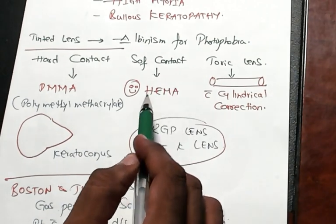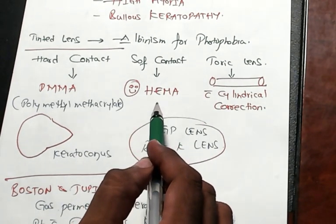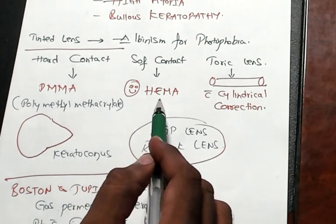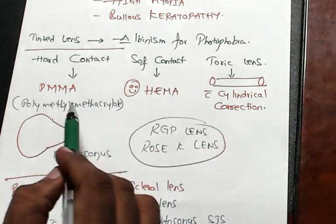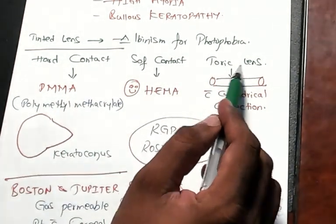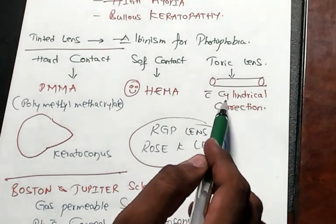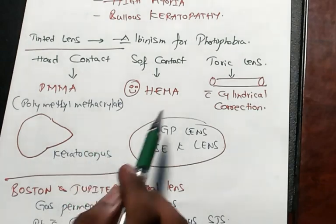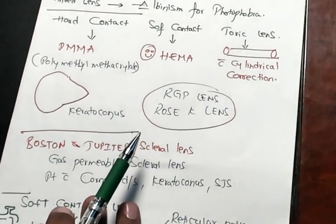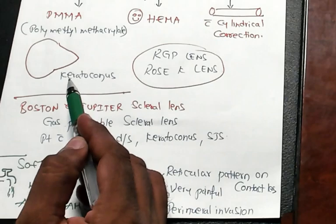Soft contact is HEMA. You had a soft corner to that beautiful HEMA, so soft contact. And toric lens, toric lens is basically a lens where you have done a cylindrical correction is what you need to remember.